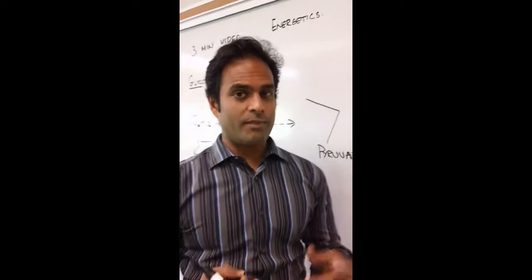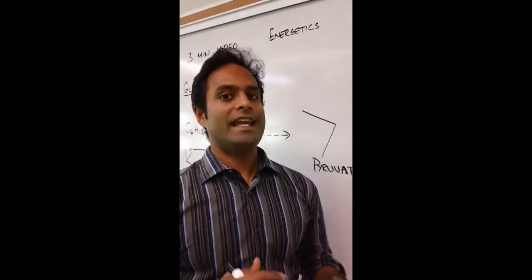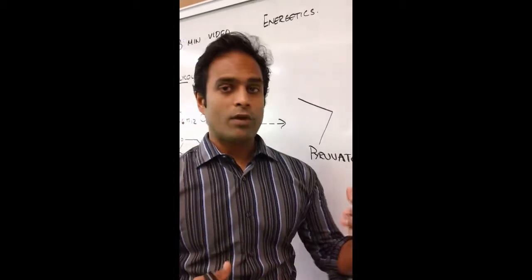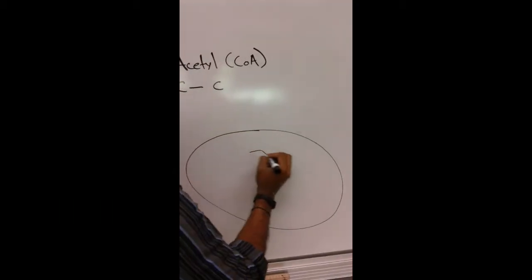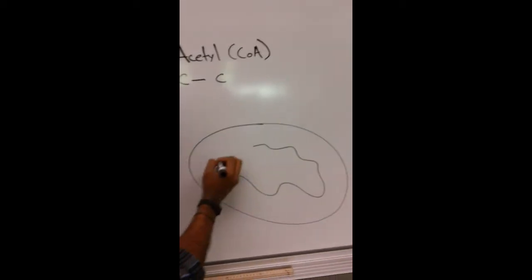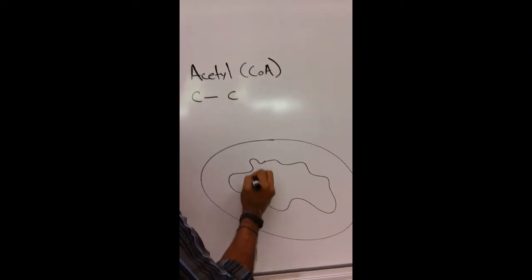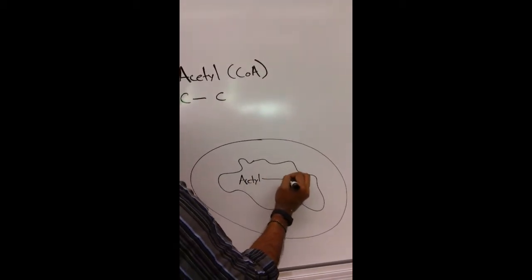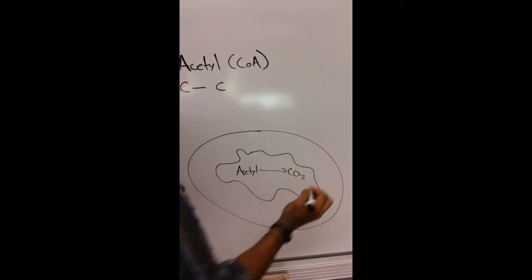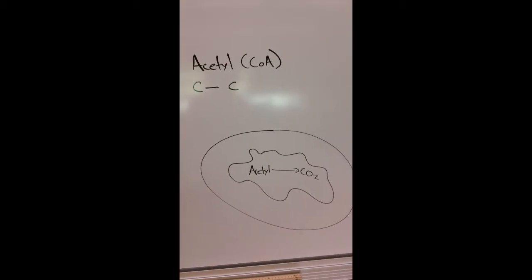If the organism has a mitochondria, it's going to come in handy at this point. If it doesn't, well, we're going to have to go a different path. But in the mitochondria, that acetyl-CoA is going to be broken down even further into basically the simplest molecule that it's going to become, CO2.